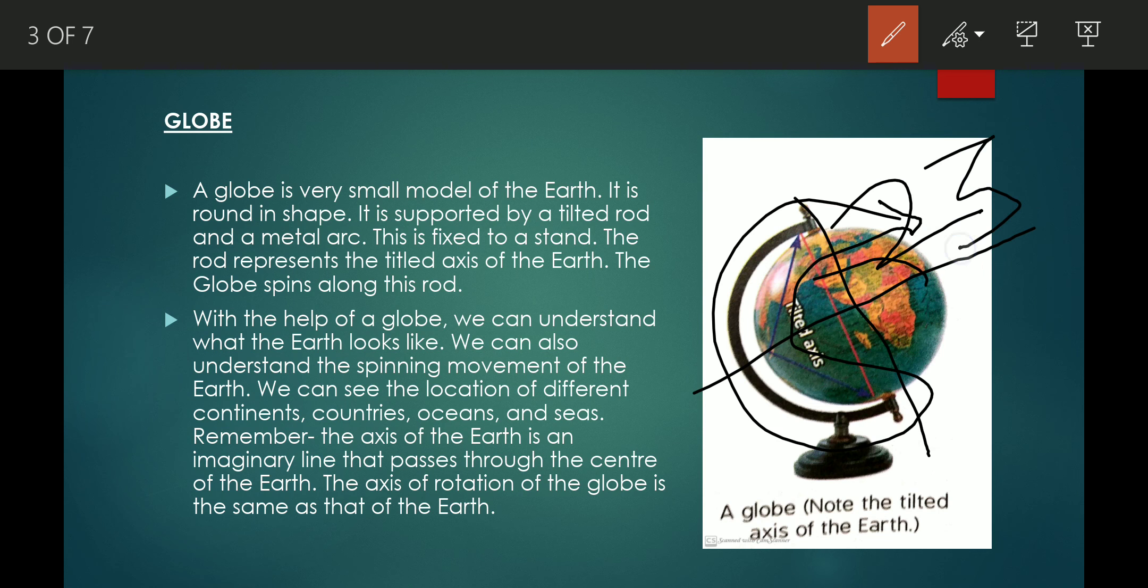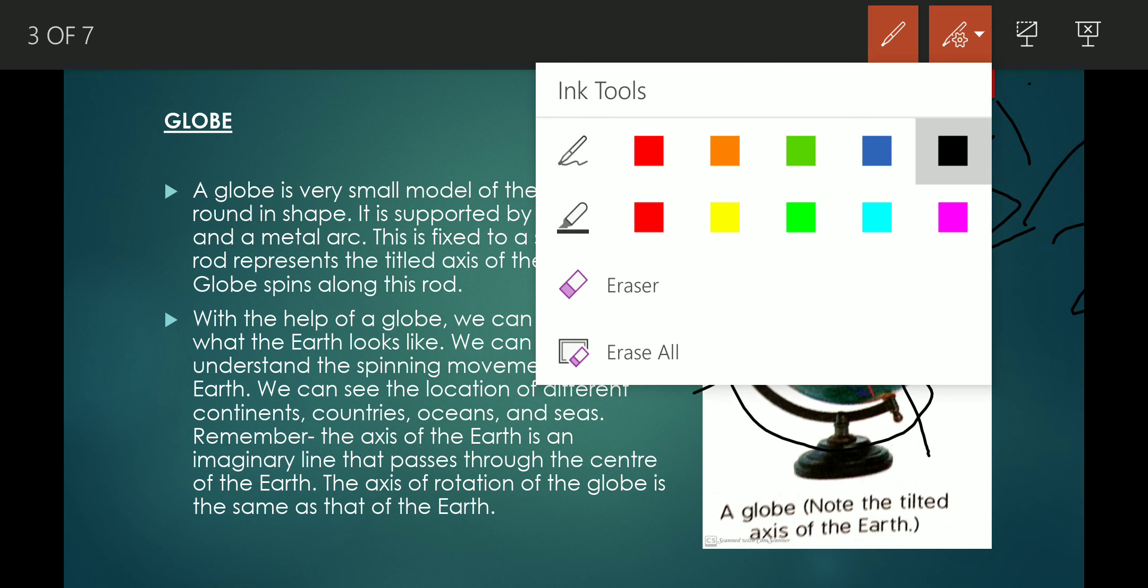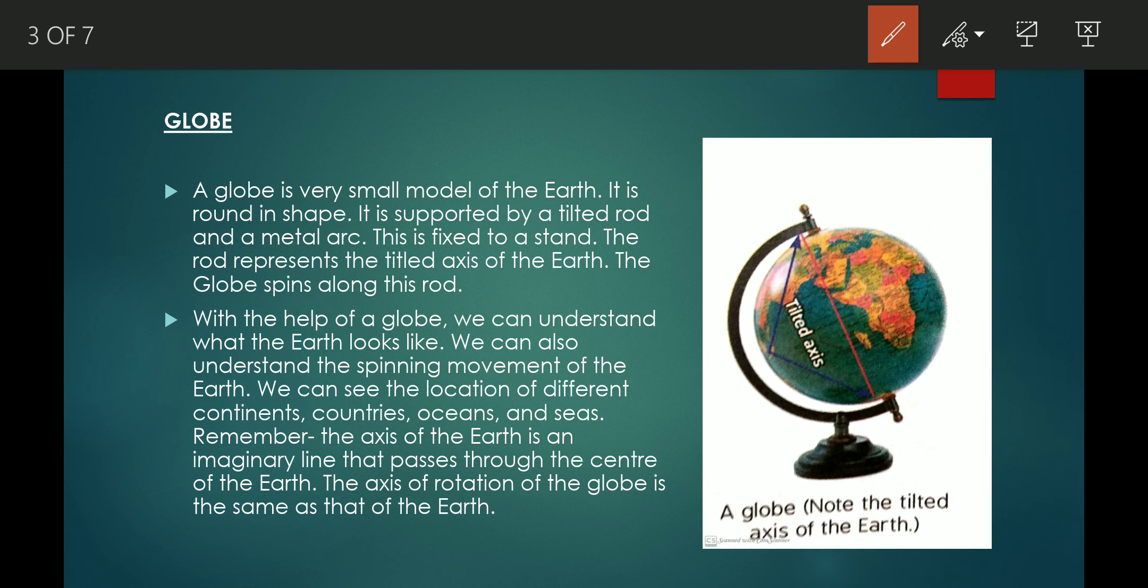A globe is a miniature form of the earth and it stands by a rod tilted in an axis the same manner as the earth. With the help of a globe, we can understand what the earth looks like. We can also understand the spinning movement of the earth. We can see the location of different continents, countries, oceans and seas.